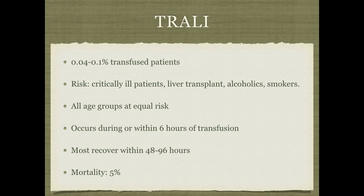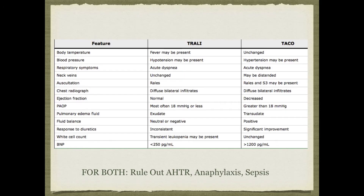Patients at risk for TRALI are those who are critically ill, liver patients, patients who drink or smoke. It affects all age groups and both sexes equally. It occurs pretty quickly. To differentiate TRALI from TACO: TRALI is like ARDS — hypotension, non-cardiogenic — while TACO is fluid overload, cardiogenic. For both, you must rule out acute hemolytic transfusion reaction, anaphylaxis, and sepsis.